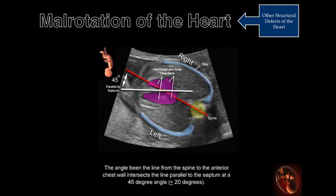In the normal fetus, the interventricular septum lies 45 degrees from a line drawn from the spine to the anterior chest wall. The normal position of the heart is plus or minus 20 degrees from the position of the septum in this image. If the septum deviates more than 20 degrees, malrotation must be considered. Malrotated hearts are often associated with structural abnormalities.